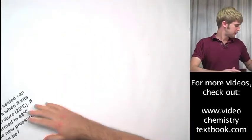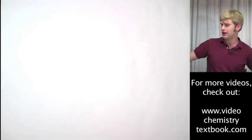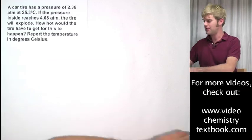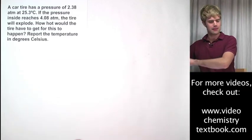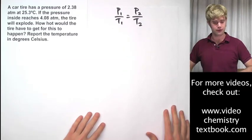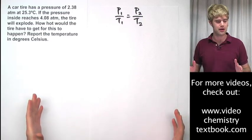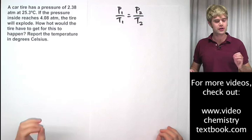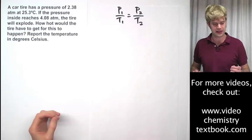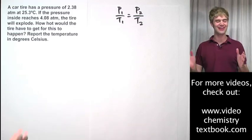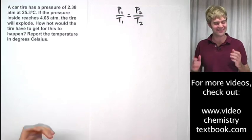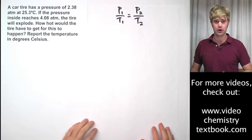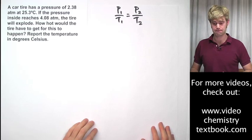Let's look at some more. I'm going to look at three problems total and each one is going to be a little bit trickier than the one before it. So here we are talking about a tire, a car tire that has a pressure of 2.38 ATM at 25.3 degrees Celsius. If the pressure inside reaches 4.08 ATM, the tire will explode. How hot would the tire have to be for this explosion to happen? And then report the temperature in degrees Celsius.